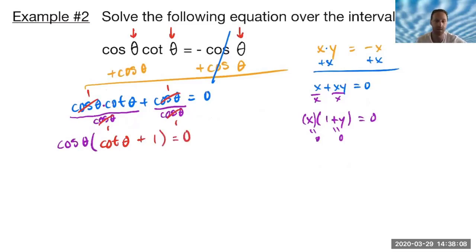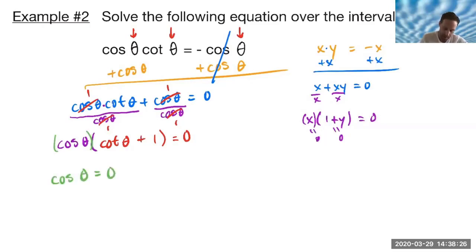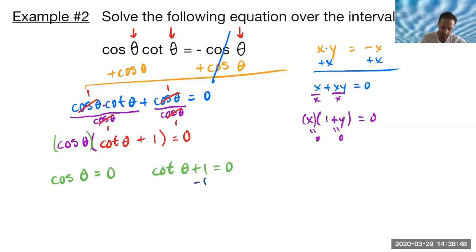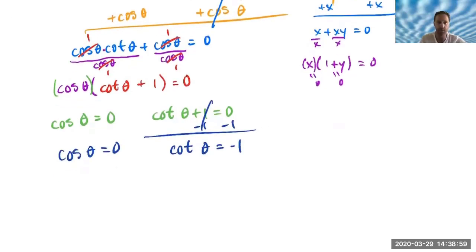Remember, that doesn't just cancel out and disappear — we're mathematicians, not magicians. So with this, now that I have the first factor times the second factor, I'll go off to the side and set the first factor equal to zero, as well as the second factor, which is cotangent theta plus one. Now we're back to where we were in the previous problem: one trig function equals zero or some number. When I subtract the one over, I have cotangent equals negative one, and for the other factor, cosine theta equals zero.